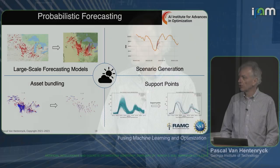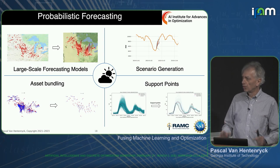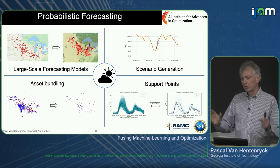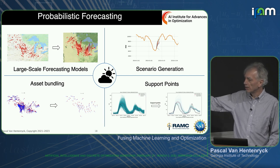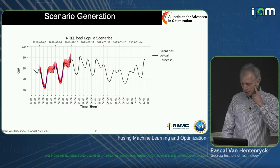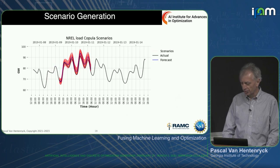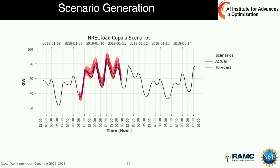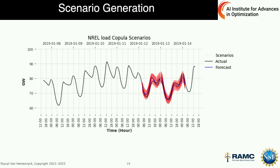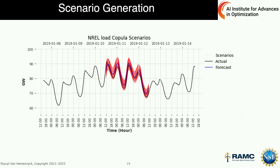Forecasting is a very interesting area for machine learning with a lot of recent progress. We do forecasting for everything and also generate scenarios for stochastic optimization. For stochastic operation, we bundle some assets because there are thousands of wind farms, then find the right scenarios. We use temporal fusion transformers, taking into account weather forecasts and a large number of historical data points, plus copula methods for generating smooth scenarios.